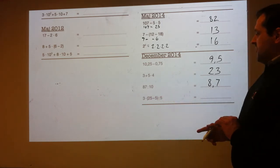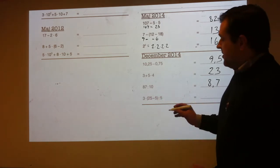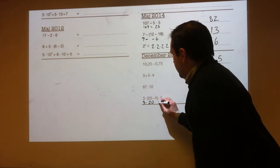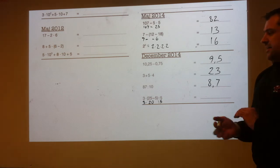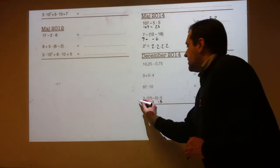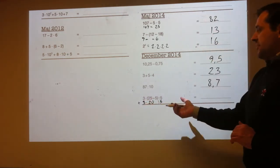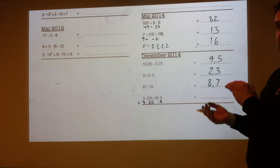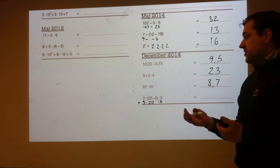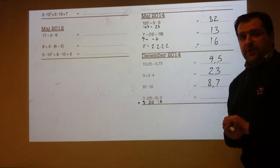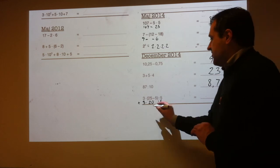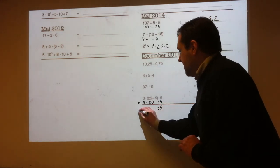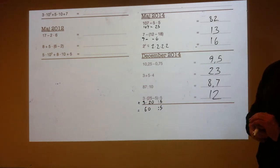3 times (25 minus 5) divided by 5. Do the bracket first: so that's 3 times 20 divided by 5. When you see multiplication and division in the same expression, there's no rule that says do one before the other — you just do it in order from left to right. So 3 times 20 is 60, then 60 divided by 5 is 12.